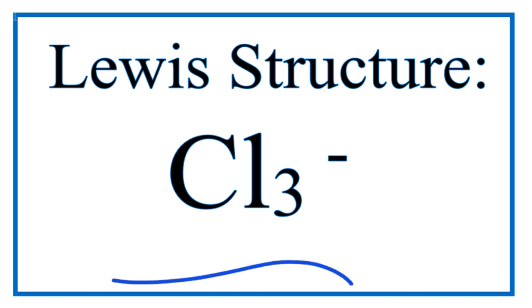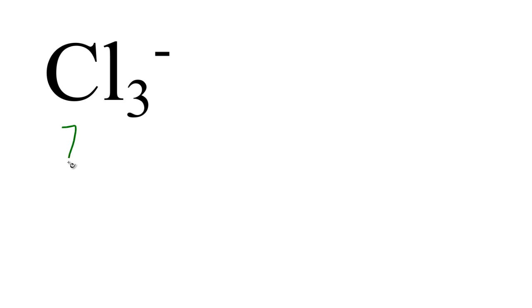For the Cl3 minus Lewis structure, let's add up the valence electrons first. Chlorine's in group 17, sometimes called 7a. It has seven valence electrons, and then we have three chlorine atoms, so we'll multiply that by three.